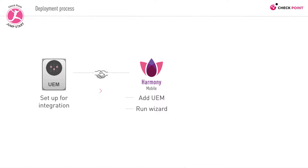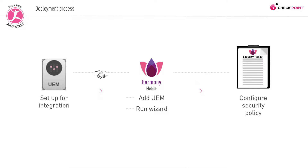Now that everything is fully integrated, and the security groups and device identifiers have been fetched from the UEM and everything is in sync, you proceed to configure the security policy based on the organizational standards and preferences. This includes restricting and easing security rules in order to define which behaviors on the device are to be classified as high, medium, and low risk.